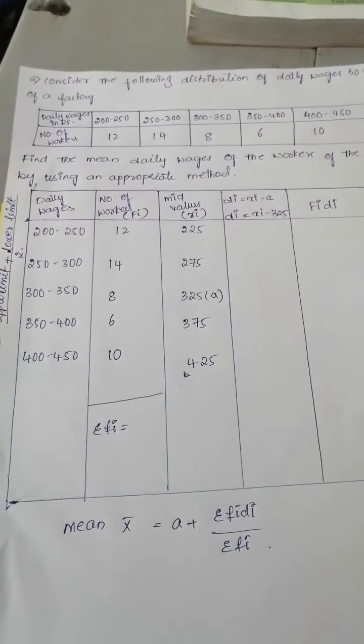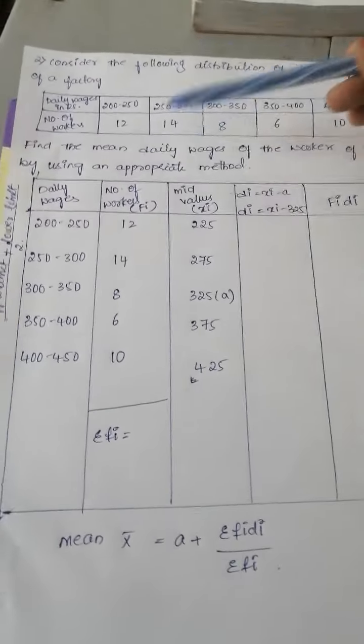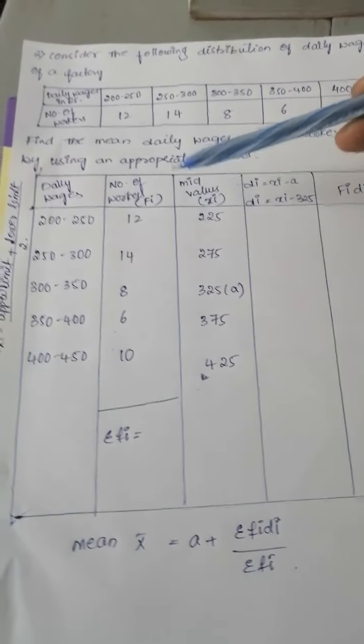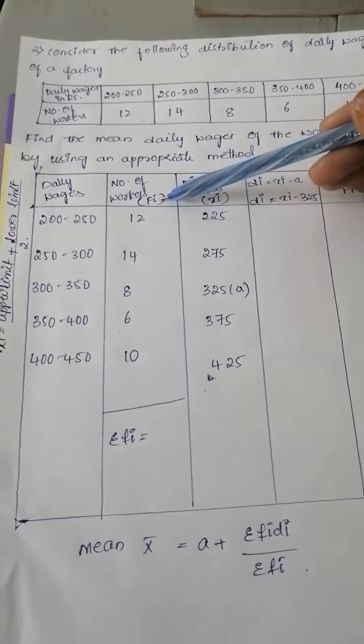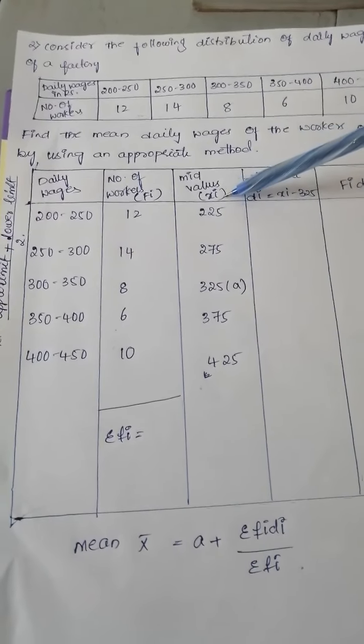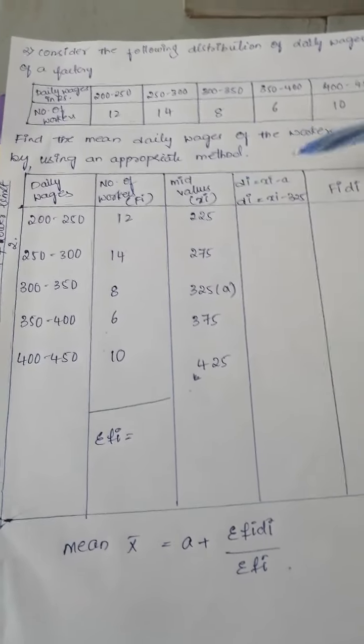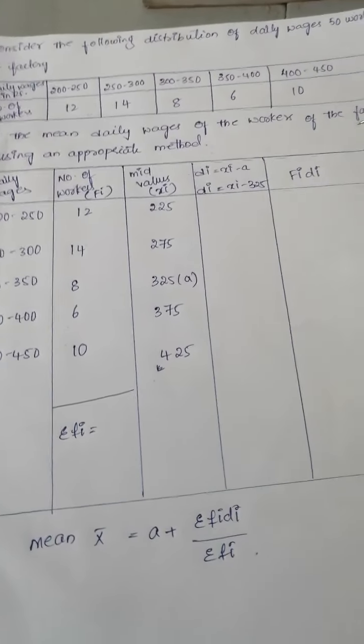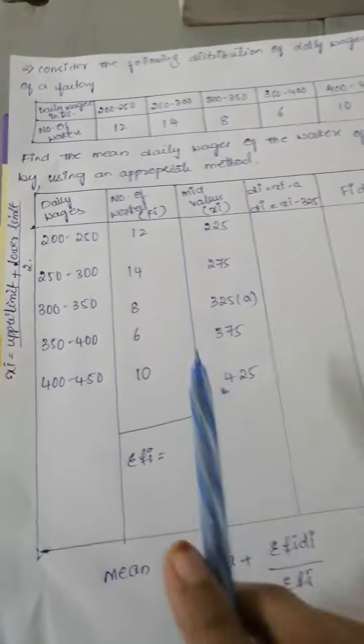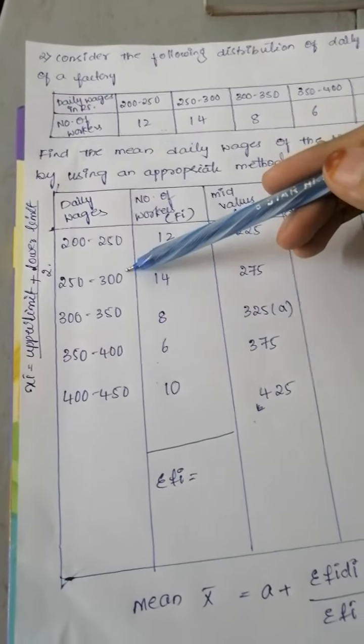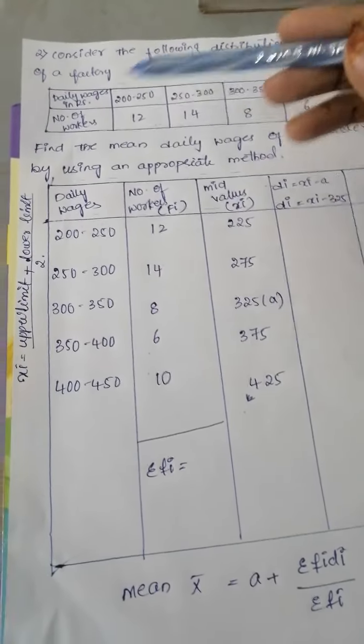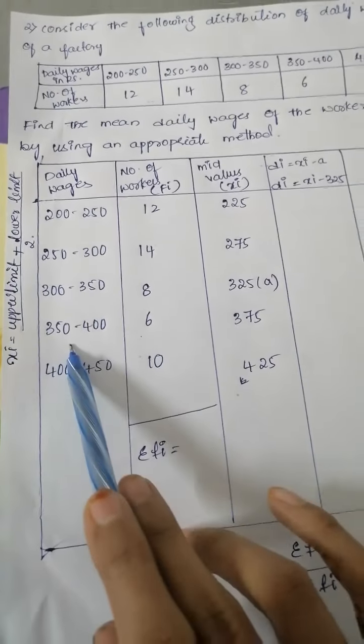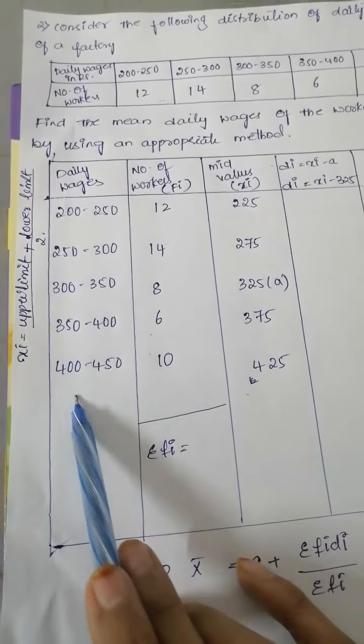First, we should draw a table. First column, daily wages. Second column, number of workers, which is denoted by Fi, means frequency. Third column, mid value, which means Xi. Di equal to Xi minus A. A means assumed value. Fi into Di. Daily wages are already given: 200 to 250, 250 to 300, 300 to 350, 350 to 400, 400 to 450.